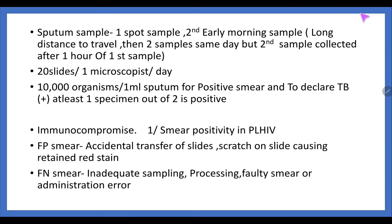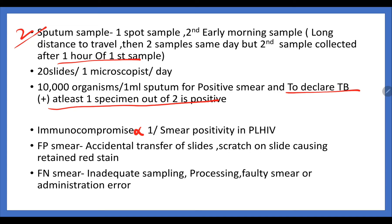For sputum sample collection, if a person comes with symptoms, we need to collect two sputum samples — one at spot and the second could be early morning. If a person has to travel a long distance, they can collect both the same day, but make sure the second is collected at least one hour after the first. 20 slides per microscopist can be viewed and results given per day. Importantly, nearly 10,000 organisms per mL of sputum are needed for a positive smear. At least one specimen out of the two should be positive to declare the person TB positive.